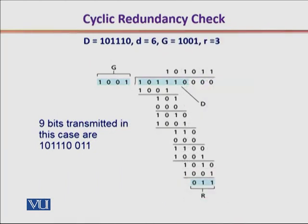Let's look at an example. We have 6 data bits and a generator polynomial that is 1001. It can also be represented as x to the power 3 plus 1, because the coefficients for x squared and x to the power 1 are 0. That is why we write 1001, or equivalently x³ + 1.